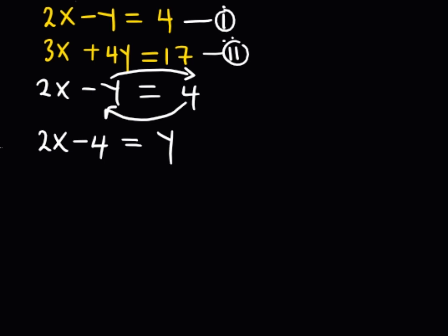Now afterwards, I'm going to get this y, I substitute it in equation number 2. So I'm going to have 3x plus 4, where there is y, I'm going to substitute 2x minus 4, and everything is equated to 17.